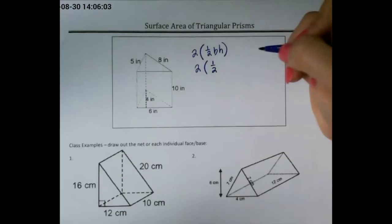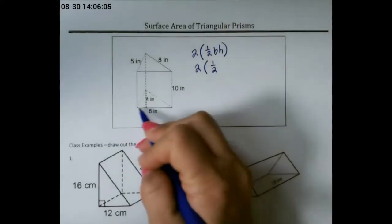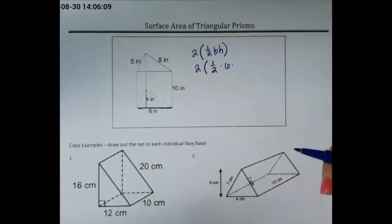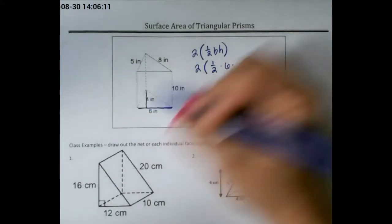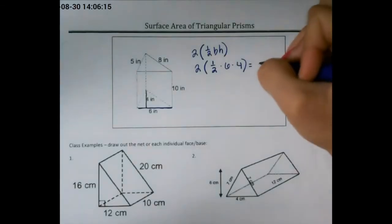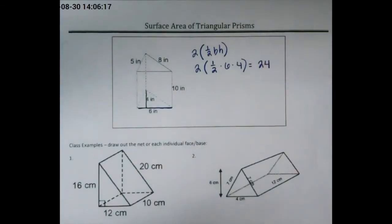Our base of our triangle on this shape is going to be 6, and our height of our triangle would be 4. So our area of both triangles together is 24.